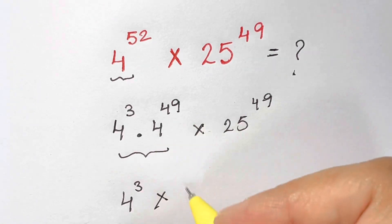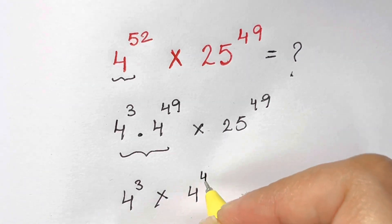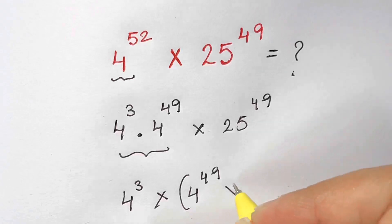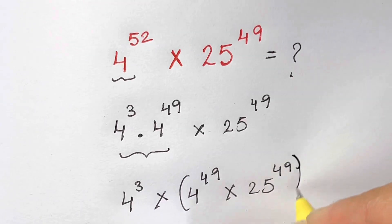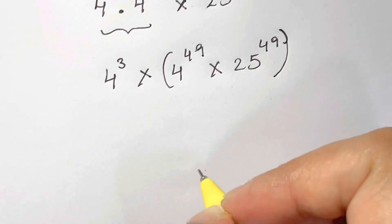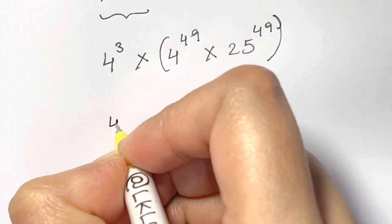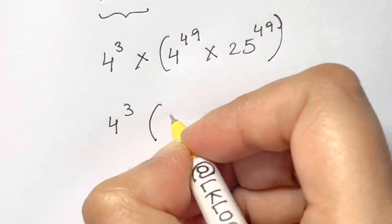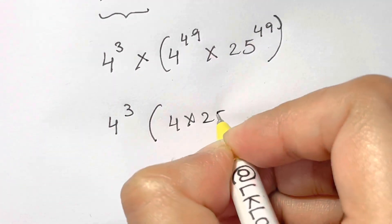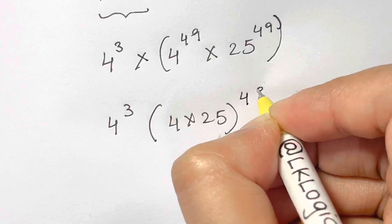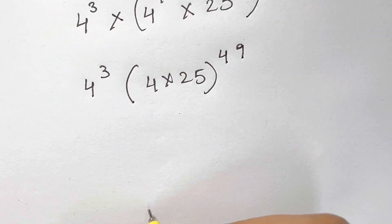So that will give us 4 cubed times 4 times 25 whole to the power of 49. So what is 4 times 25?